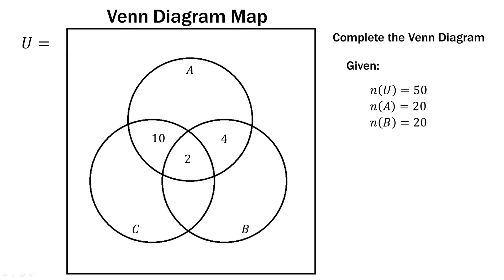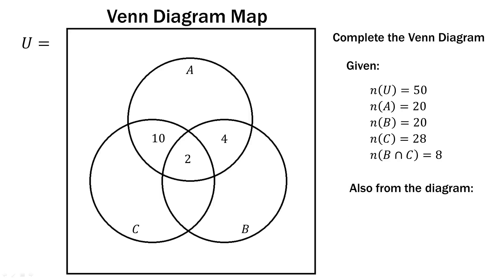We're told the number of elements in B is 20 — if we look at set B in the lower right, we have the 2 and the 4 accounted for. The number of elements in C equals 28 — if we look at set C in the lower left, the 10 and 2 are part of C, but two regions are still missing. We're also told that the number of elements in B intersect C equals 8. So the oblong oval shape between B and C must add up to 8. We can use all of this to find the missing pieces. From the diagram itself, we also know the triple intersection A∩B∩C is 2, A∩C is 12 (the 10 and 2), and A∩B is 6 (the 2 and 4).